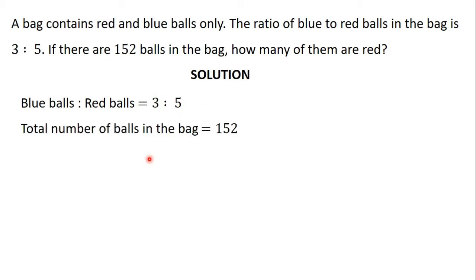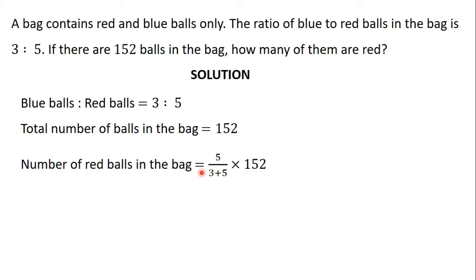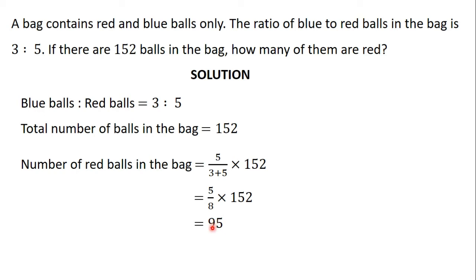We know that the total number of balls in the bag is 152. The number of red balls is going to be the part of the ratio that belongs to red balls, which is 5, divided by the total ratio, which is 3 plus 5, times the total number of balls, which is 152. This gives us 5 divided by 8 times 152, which equals 95.